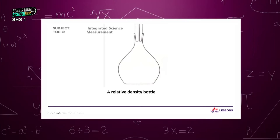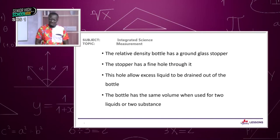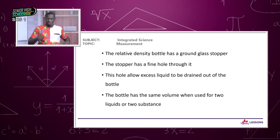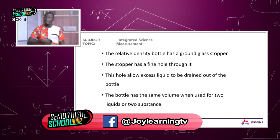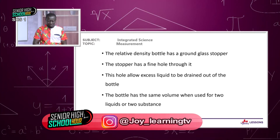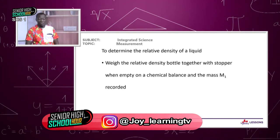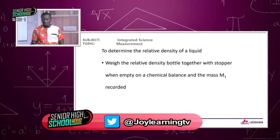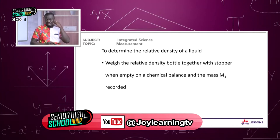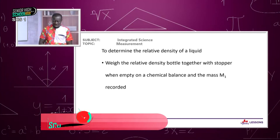The relative density bottle has a ground glass stopper with a fine hole through it to allow excess liquid to drain. The bottle has the same volume when used for two different liquids, allowing easy comparison. To determine relative density, weigh the density bottle with the stopper and record the mass M1 using a chemical balance.